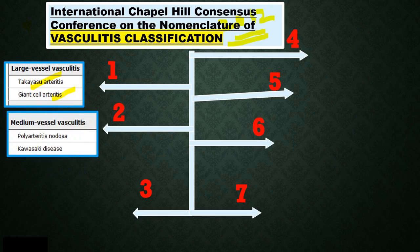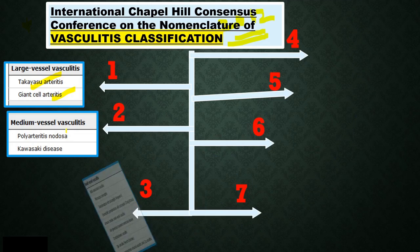Second is the medium vessel vasculitis which includes PAN — polyarteritis nodosa — and Kawasaki disease, which is more common in children. These are usually ANCA negative.